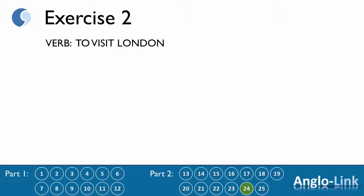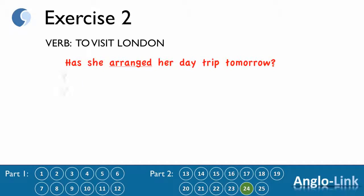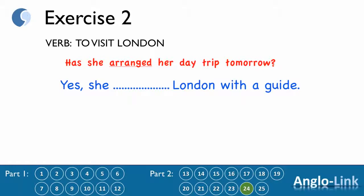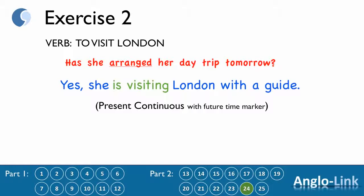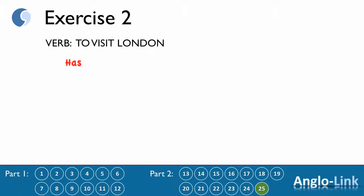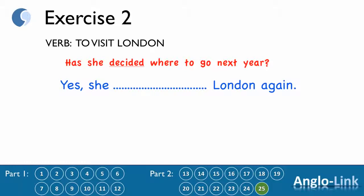Number 24: 'Has she arranged her day trip tomorrow?' 'Yes, she ___ London with a guide.' Answer: 'She is visiting London with a guide.' Present continuous with a future time marker. And finally, Number 25: 'Has she decided where to go next year?' 'Yes, she ___ London again.' Answer: 'She's going to visit London again.' Going to future.